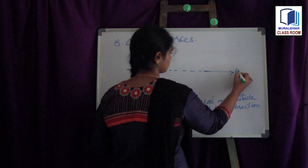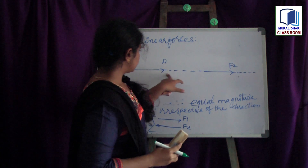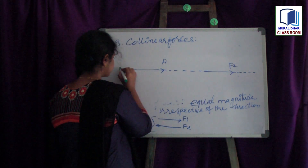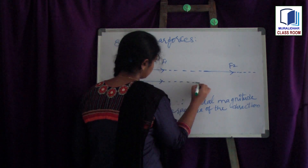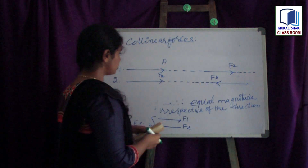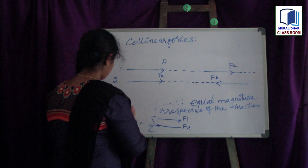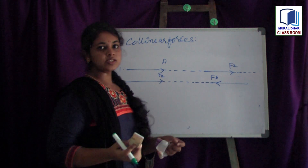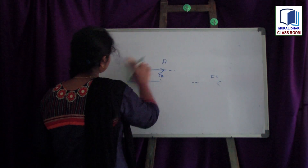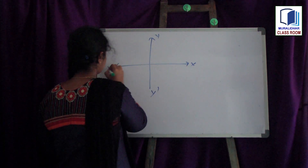The last classification of forces is collinear forces. The forces which are having the same line of action are said to be collinear forces. For example, force F1 has a line of action in one direction and force F2 has a line of action in another direction, but the lines of action of both forces lie in the same line — these forces are known as collinear forces. Even forces opposite in direction can be collinear forces if they share the same line of action.